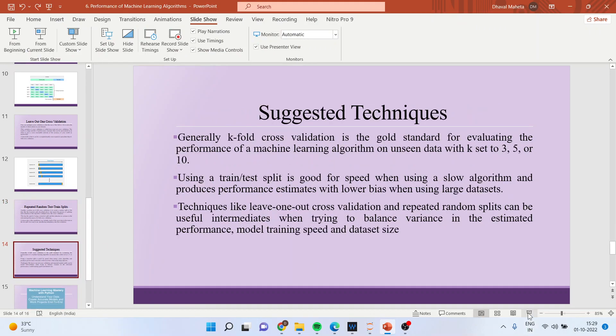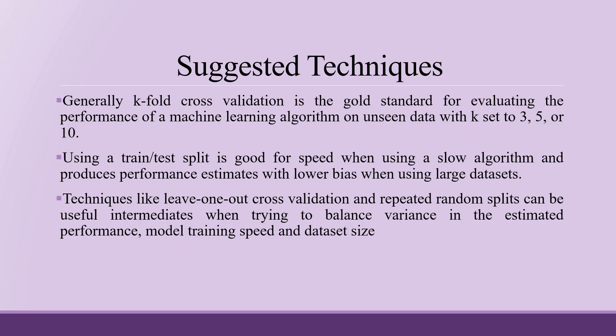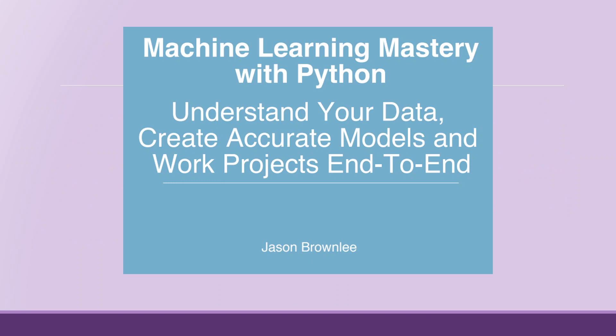What are the suggestions for when to use which technique? Generally, K-fold cross validation is the gold standard for evaluating machine learning algorithm performance on unseen data, with K set to 3, 5, or 10. Using a train-test split is good for speed with slow algorithms and produces lower-bias performance estimates with large datasets. Techniques like Leave-One-Out cross validation and repeated random splits can be useful intermediates when balancing variance in estimated performance, model training speed, and dataset size. These scores are discussed in the book Machine Learning Mastery with Python by Jason Brownlee.